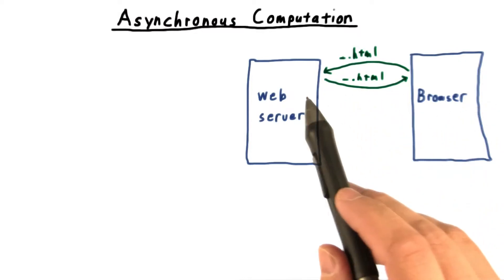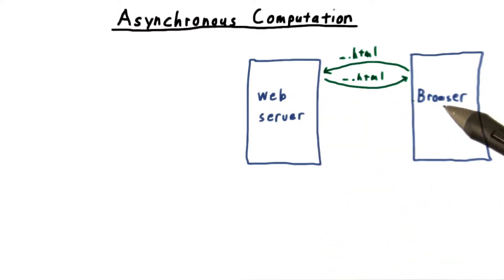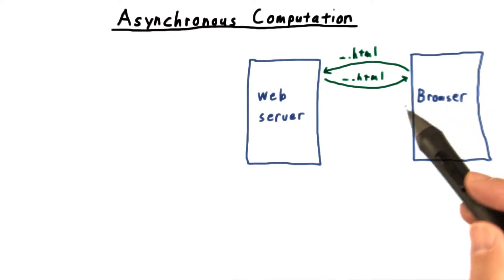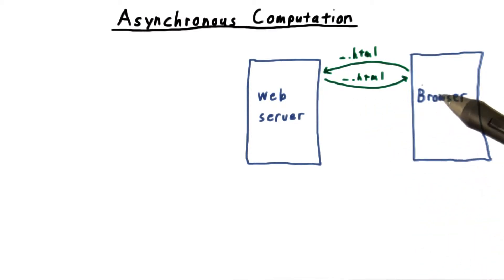You see, a web server rarely sends all the information for a web page in response to your initial request. Instead, it sends a kind of outline for the page that includes other URLs where your browser can find the details.